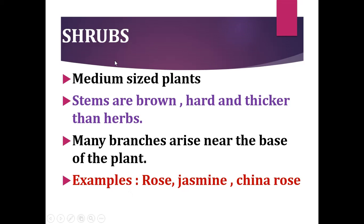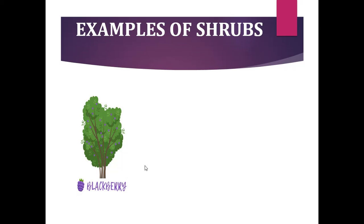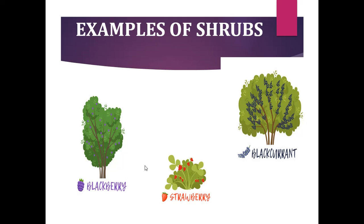Examples of shrubs are rose, jasmine, and china rose. Some more examples are blackberry, strawberry, and blackcurrant. These plants are medium-sized and their branches arise near the base of the plant.